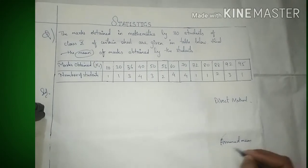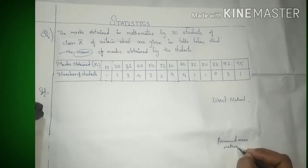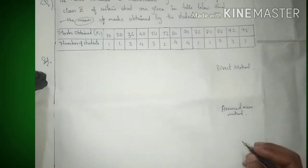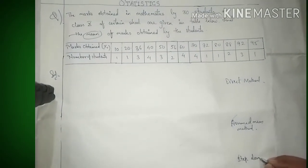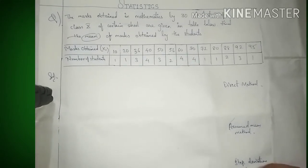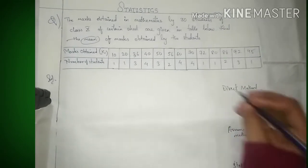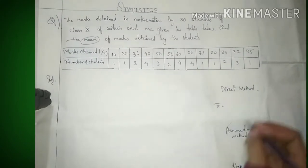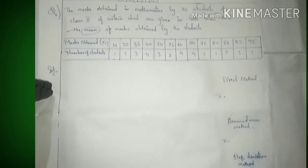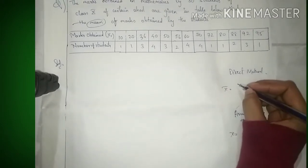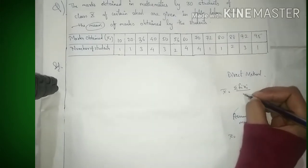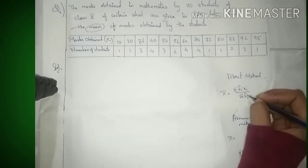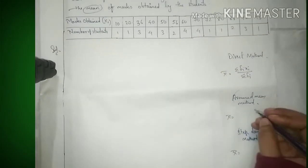आज हम देखेंगे कि easy way में Direct Method, Assumed Mean Method, और Step Deviation के formulas याद कैसे रख सकते हैं। Step Deviation Method और Assumed Mean Method grouped data के लिए use कर सकते हैं, जहाँ values बड़े होंगे। Mean का symbol है x-bar। Direct Method का formula है: mean = Σfi·xi / Σfi।